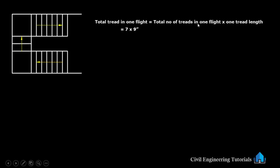Now total trade in one flight: total number of treads in one flight into one tread length. Total number of treads in one flight is 7, into 9 inch. So 7 into 9 inch equals 63 inch. This is total tread from here to here — 63 inch. This side we are calculating.